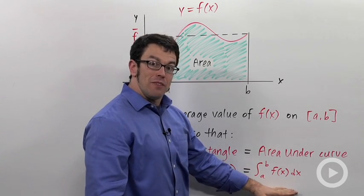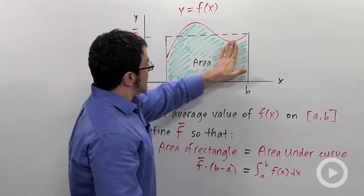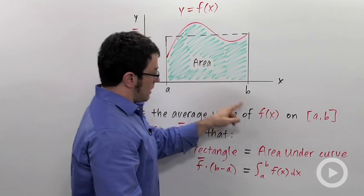On the right side we have the area of the curve, which is the definite integral. The area of this green region, the definite integral of f from a to b.